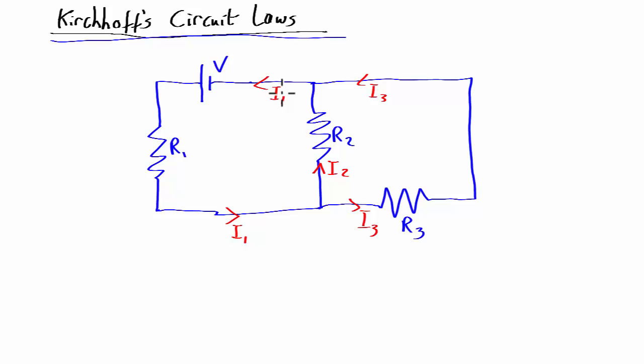Kirchhoff's first law is basically law of conservation of electrons. What it says is electrons don't fall into a black hole somewhere in their way around the circuit. The electrons don't jump off the wires unless it's arcing or something like that. So the number of electrons into or out of any node must be conserved.